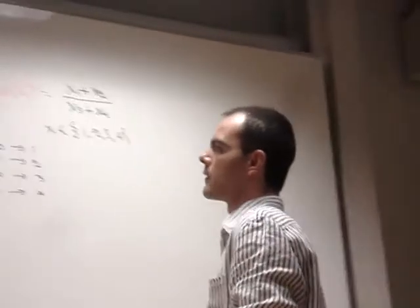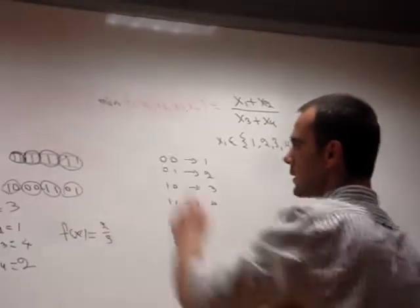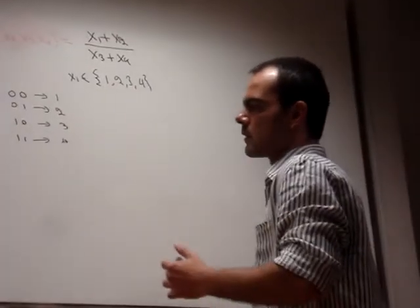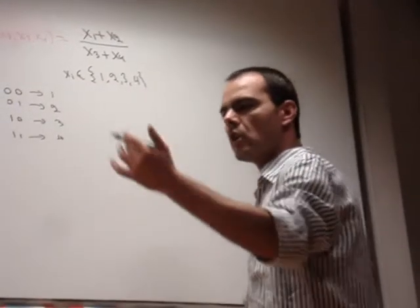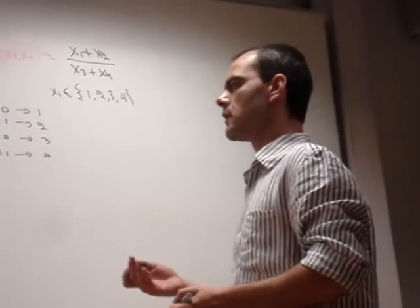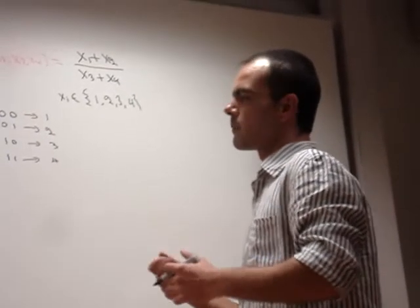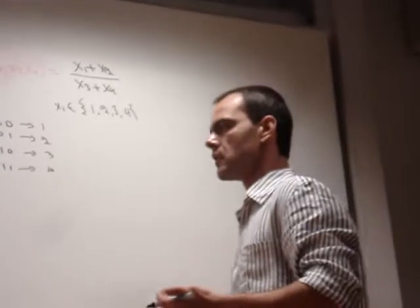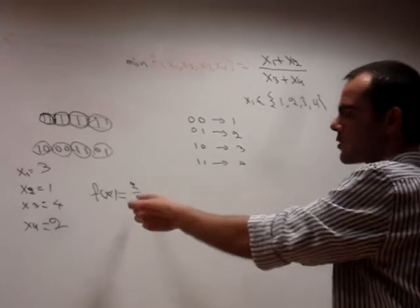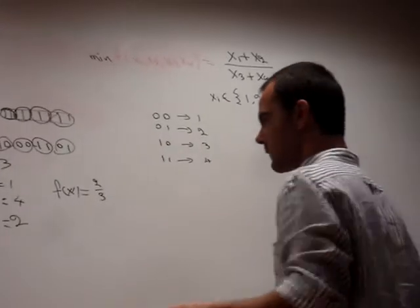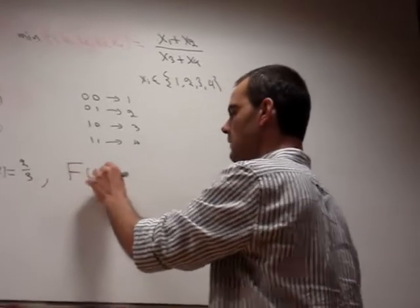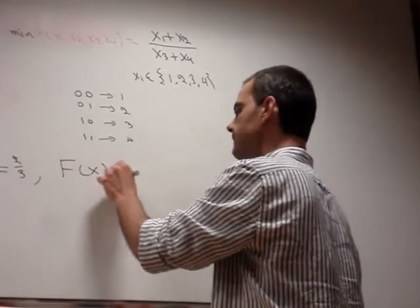Since we have a minimization problem, we want a low value for the objective function. We should use a fitness function that should be perhaps the inverse of the objective function, because the objective function is always positive. So we define the fitness function to be this.